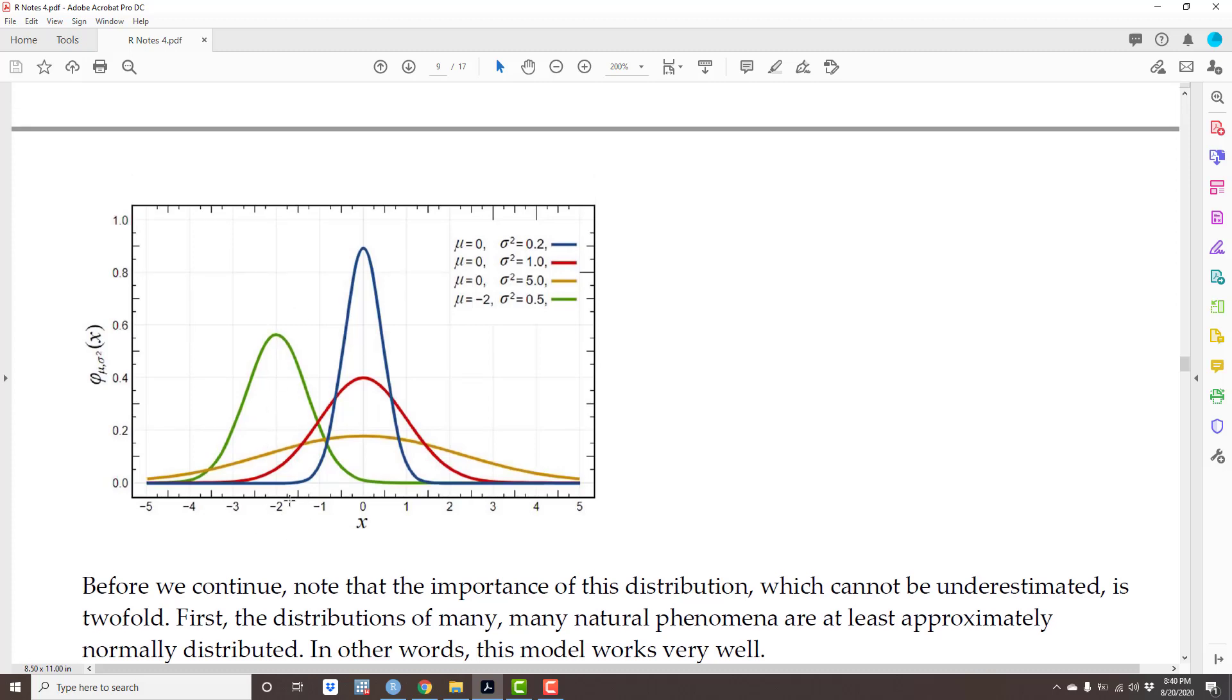Most of the data here is around zero. In the green curve, most of the data is around minus two. Now it's also interesting to use the normal distribution to illustrate the concept of variance. Compare, for instance, the blue curve and the red curve. They all have the same mean.